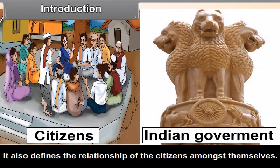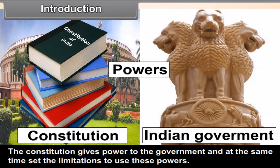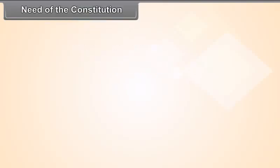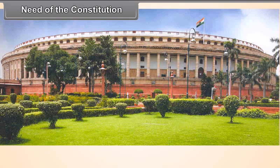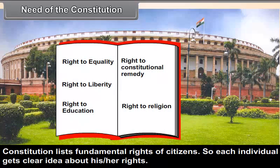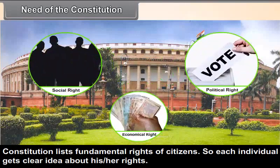Constitution helps define the nature of the relationship between the citizens and the government of the country. It also defines the relationship of the citizens amongst themselves. The Constitution gives powers to the government and at the same time sets limitations on the use of these powers. It includes provisions for the rights of the people. Constitution lists fundamental rights of citizens, so each individual gets a clear idea about his or her rights.